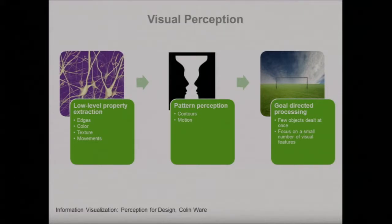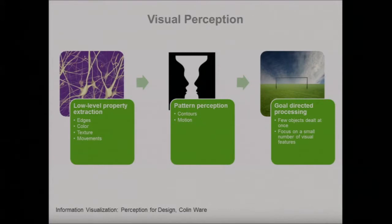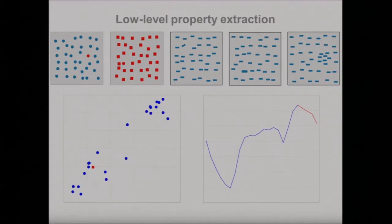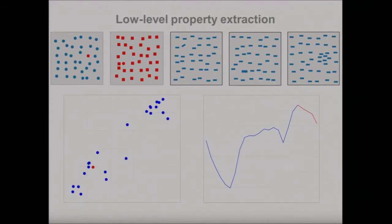We have something called visual perception. We divide this into three stages. The first stage is all about neurons — we can detect edges, colors, textures, movements. The second part is more about patterns, contours, and motion. The third part is about us actually thinking and trying to interpret data. The first stage is really great because we have what's called preattentive processing. If we look at something and it stands out in less than 250 milliseconds, it's preattentive. Your eyes are immediately focused on things that stand out — color, shape, orientation, size, or even clusters.